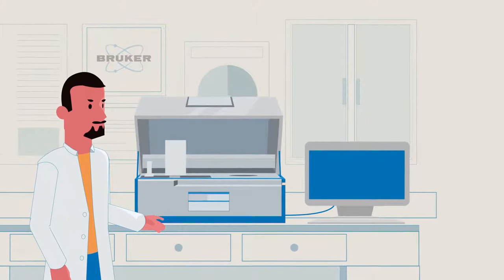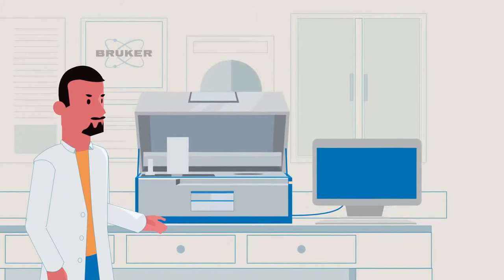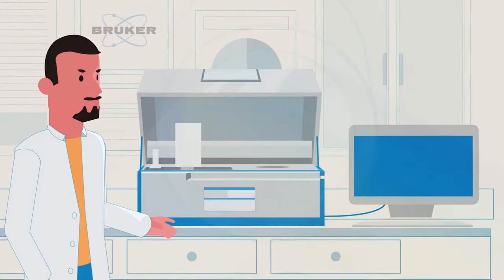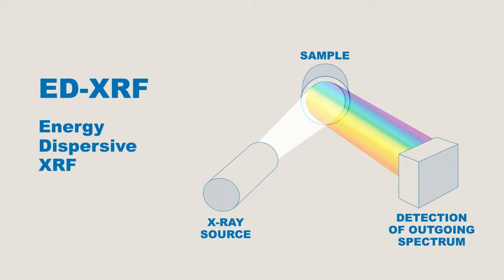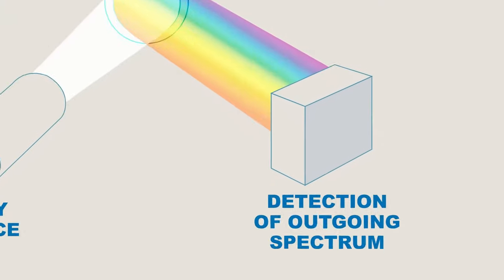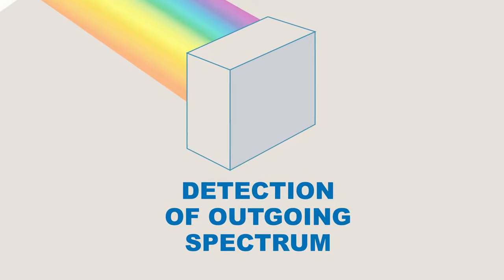Each element emits a unique fluorescence. There are two techniques used to separate and identify these energies. The first method is known as energy dispersive, or EDXRF. The spectral resolution in EDXRF is achieved by the quality of the detector. These detectors have several thousand channels to simultaneously measure the entire spectrum coming off the sample.